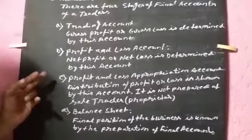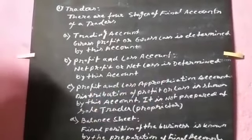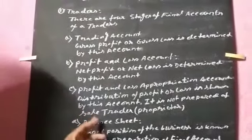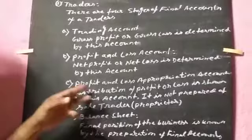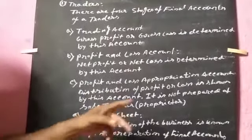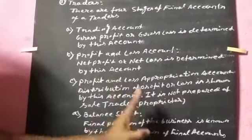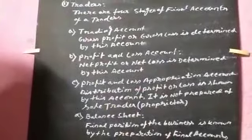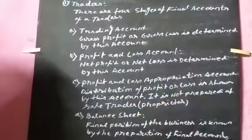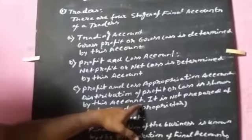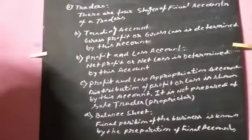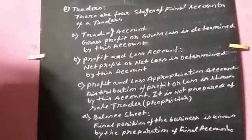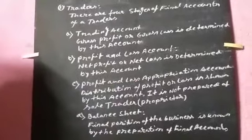These accounts, if sole traders or sole proprietors or single traders or single proprietors, if someone is this type of proprietor, these accounts will not be made. This is for partnership. What is profit and loss appropriation account? What does this mean? Distribution of profit or loss in this account. This is not prepared for sole traders.